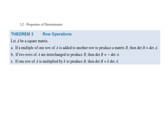We begin the section with a theorem involving row operations and how they affect the value of a determinant for a matrix. If a multiple of one row is added to another row to produce matrix B, the determinant doesn't change — a row replacement operation does not affect the determinant. If two rows are interchanged to produce matrix B, the determinant of B is the opposite sign of the determinant of A. And if you multiply a row by scalar K, the determinant scales by that same factor K.